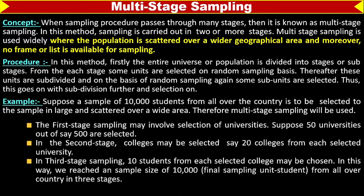Let us understand with the help of an example. Suppose a sample of 10,000 students from all over the country is to be selected. The sample is large and scattered over a wide area. Therefore, multi-stage sampling will be used. We have a list of 10,000 students from all over the country, but the students are spread over a wide geographical area.